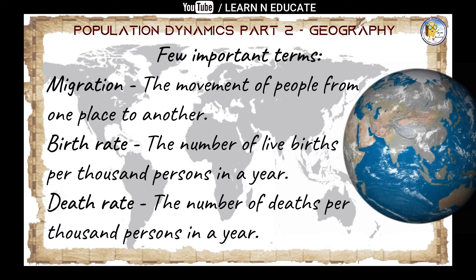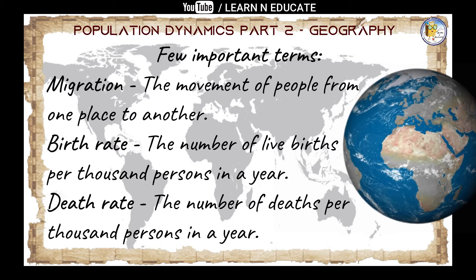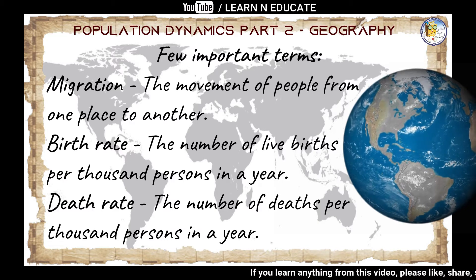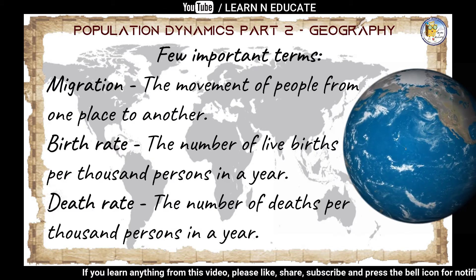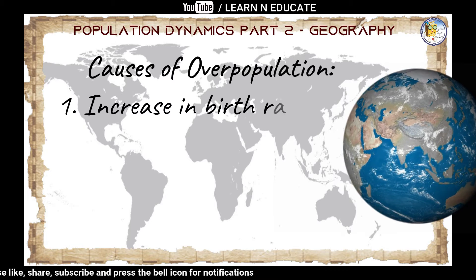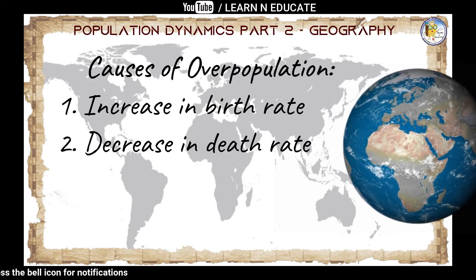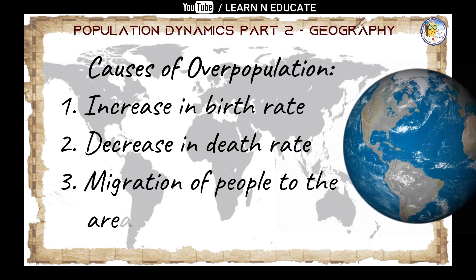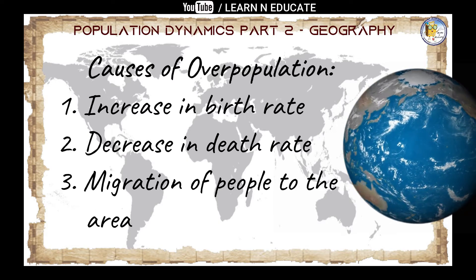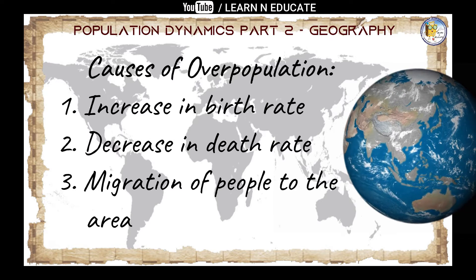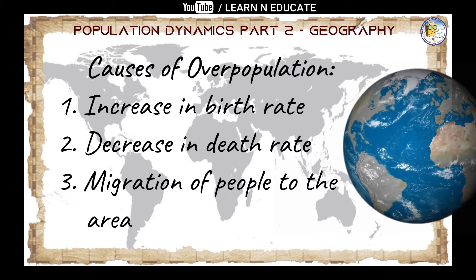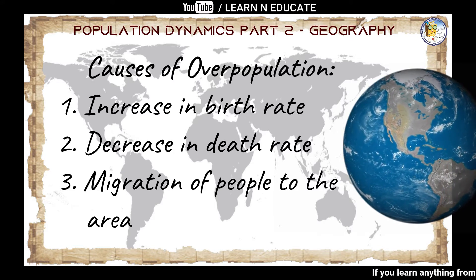The causes of overpopulation are: an increase in birth rate — when live births are more, the population will increase; a decrease in death rate — when fewer people die, the population will increase; and migration of people into the area — when people come and reside in a particular area, the population of that area will increase.